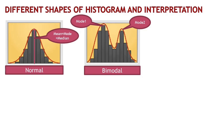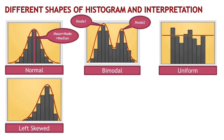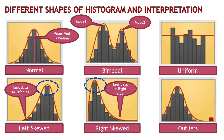Next, we have the uniform shape. This shape shows a relatively flat distribution, indicating an even or equal frequency across the intervals. It's like every data point gets an equal chance to shine. Now let's explore the left skewed shape. This shape displays a longer tail on the left side, suggesting that the majority of the data points are concentrated towards the higher values. On the other hand, we have the right skewed shape — here we see a longer tail on the right side, indicating that most data points are concentrated towards the lower values. Lastly, we have outliers: these are individual data points that deviate significantly from the overall pattern.